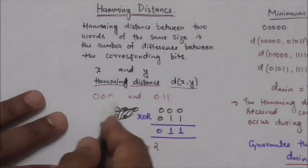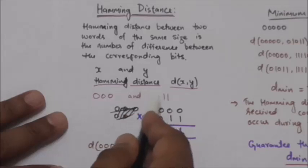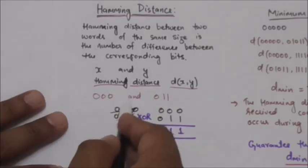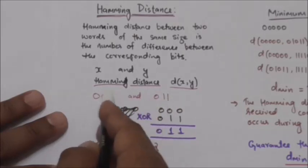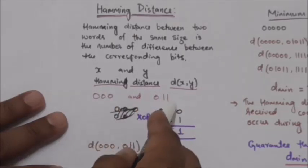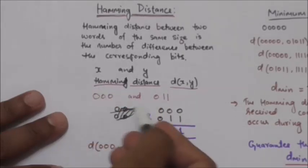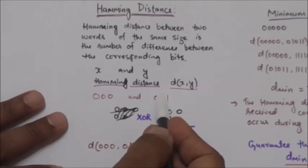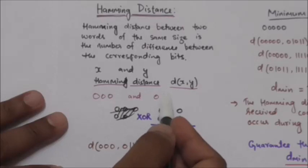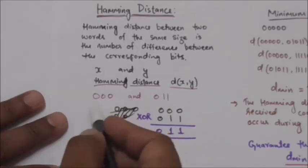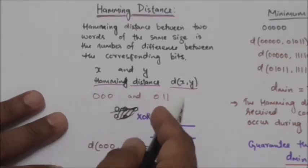Consider these two words: 000 and 011. The Hamming distance between these two words is 2, because the number of differences between the corresponding bits in these two words is 2. This bit in the first word is different from the corresponding bit in the other word, and this other bit is also different from the corresponding bit in the other word. So the number of differences between the corresponding bits is 2, and the Hamming distance between these two words is 2.